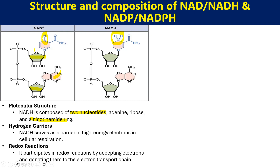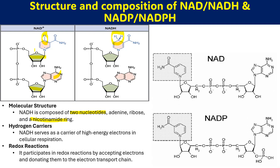NADH, NAD+, and NADPH work as electron and hydrogen carriers in oxidation-reduction reactions. The key structural difference between NAD and NADP is one extra phosphate group: in NADP, the 2'-OH of the ribose sugar is phosphorylated — a phosphate group is added at that position. That is the difference between NAD/NADH and NADP/NADPH.